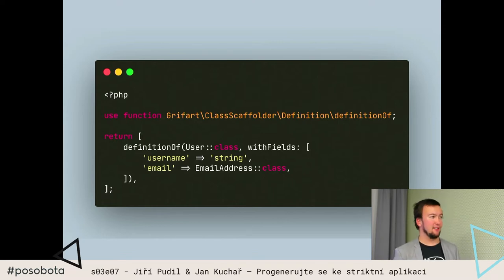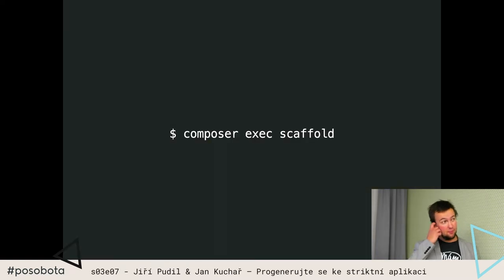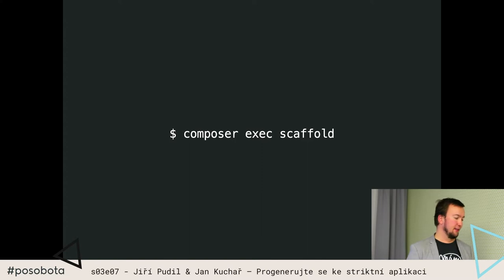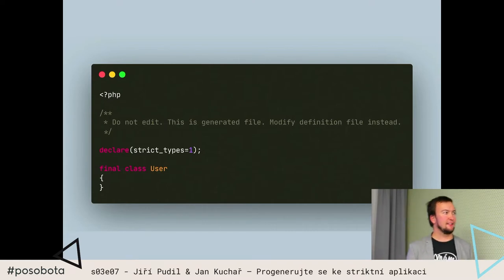Třídy, která se jmenuje user, a má dvě pole: username, které je typu string, a email, které je typu email address, což je zase nějaký můj doménový objekt. Scaffolder, který jsme si nainstalovali přes Composer, vystavuje i binárku, takže si snadno ten scaffolder pustím. Akceptuje jako argument cestu, pokud mu žádnou nedám, pracuje v current working directory. Najde tam definiční soubor a vygeneruje mi třídu user, která je finální, všechno je strict types, ale je prázdná, ačkoliv jsem si tam definoval dvě pole.